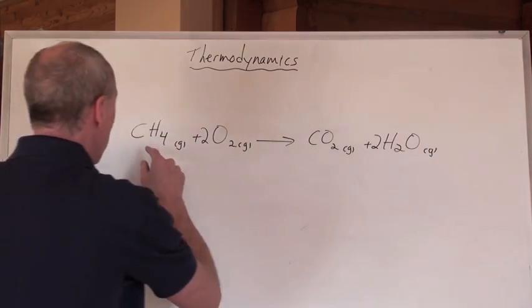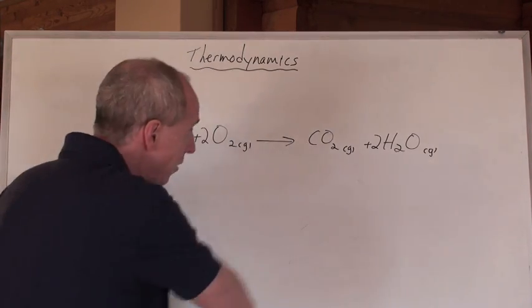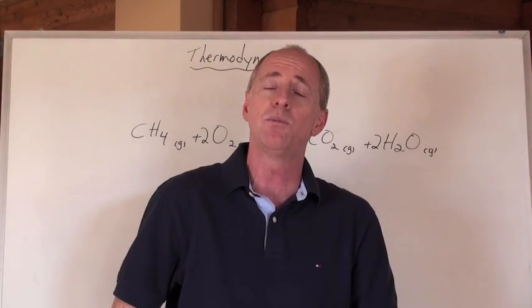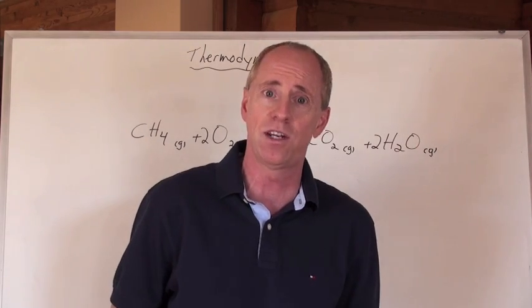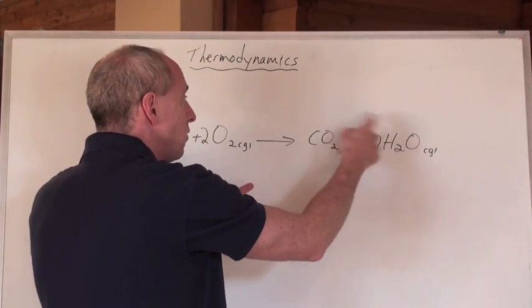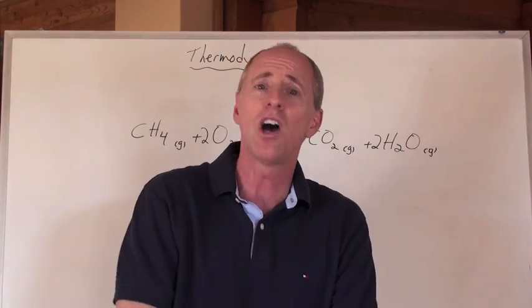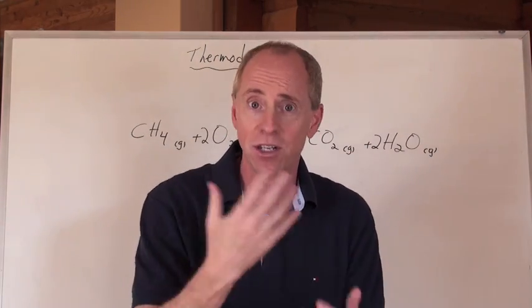We can actually understand that if there's a change in oxidation number, which there is—zero going to minus two here for oxygen—that this must be a redox reaction, and we can talk about electron transfer here as well. We can talk about all the properties of these chemicals and how CO2, when it dissolves in water, you get carbonic acid, and we can talk about Ka values. Are you getting tired yet?